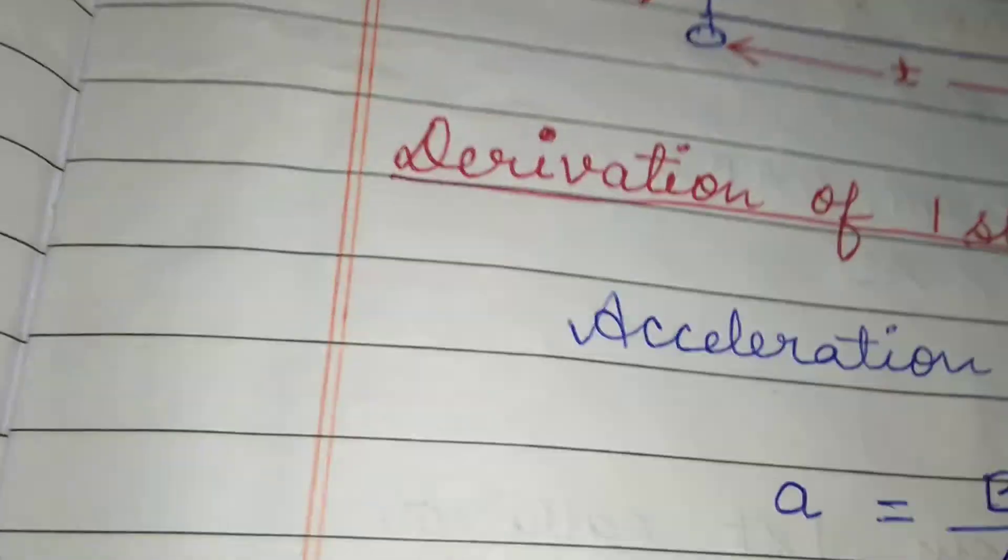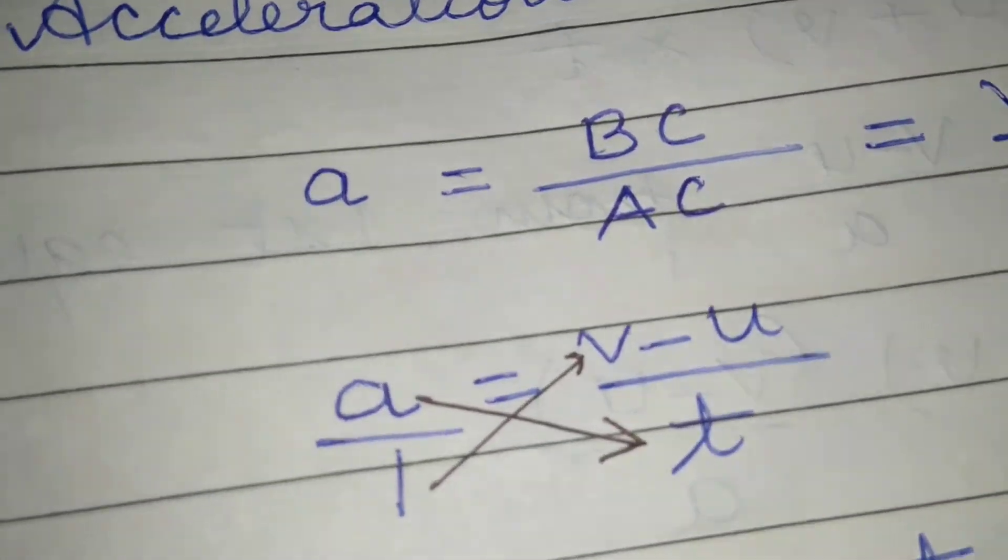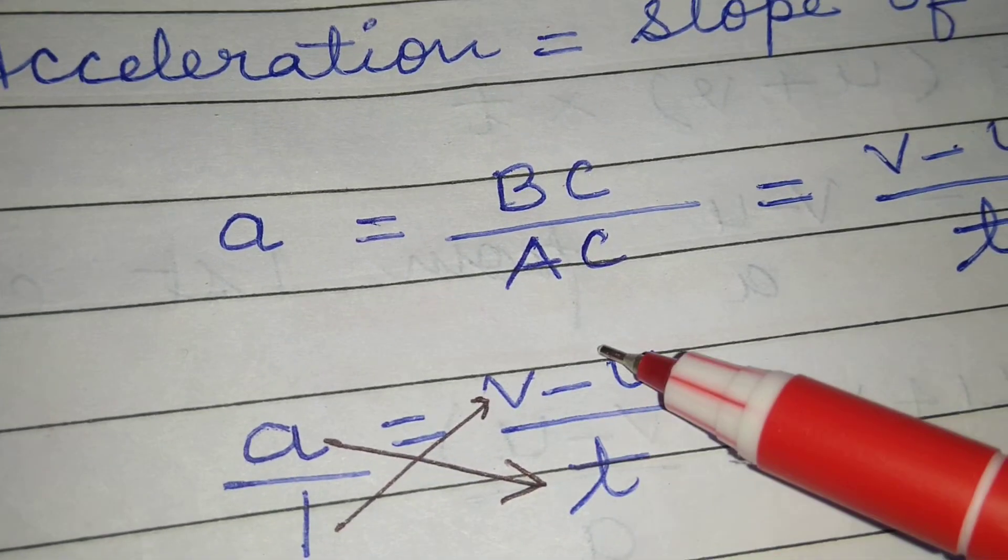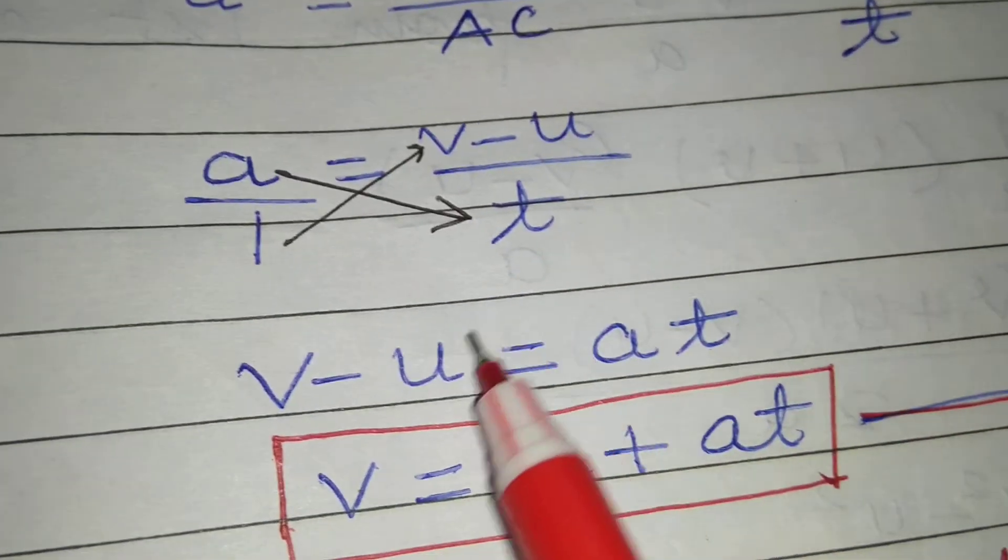So a is equal to v minus u upon t. Or if we cross multiply it, then we will get v minus u is equal to at.